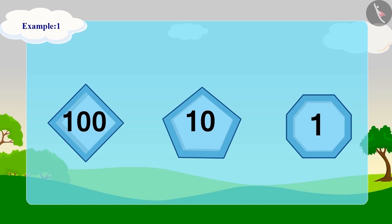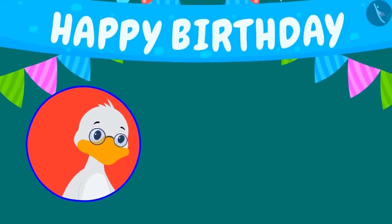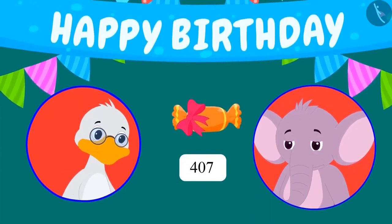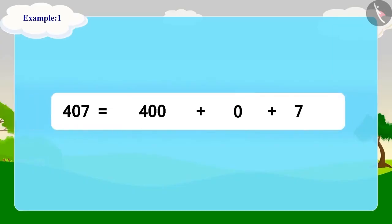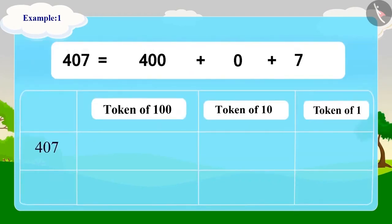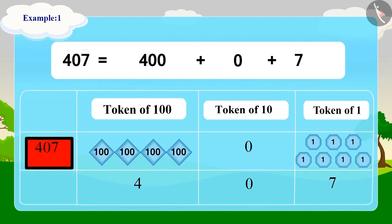We can easily identify and write 3-digit numbers using such tokens of 100, 10 and 1. Badbola Batak uncle gave 407 toffees to Appu. Can you write the number of toffees using tokens of 100, 10 and 1? We can write 407 in expanded form: 400 is 4 tokens of 100. There are no two-digit numbers here, so we write 0 in the place of the token of 10, and 7 is shown using 7 tokens of 1. In this way we can write 407 in tokens of 100, 10 and 1.